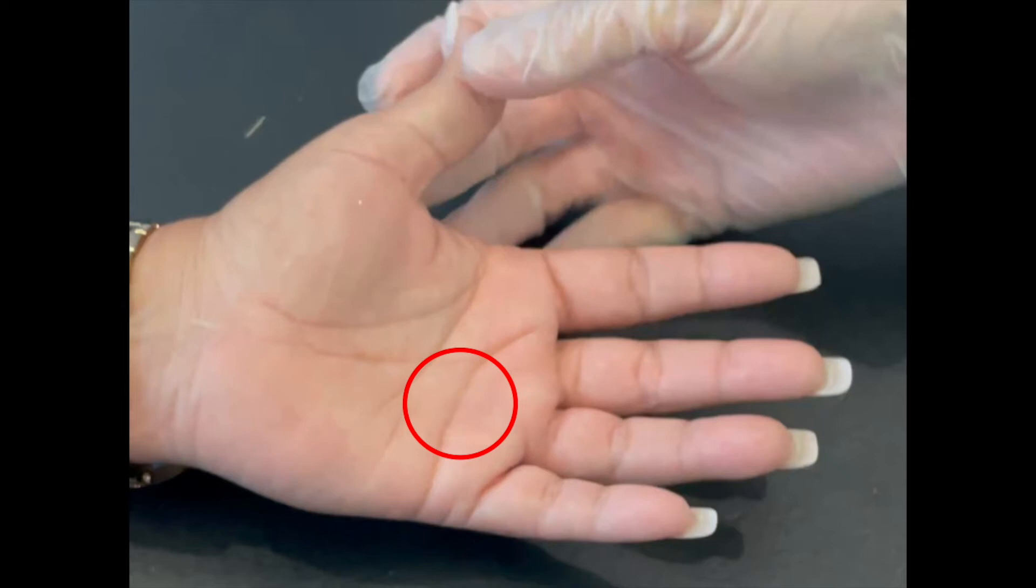Interestingly, the steroid injection does have a pretty wide effect, and you don't have to necessarily inject two adjacent fingers that are both triggering. In many cases, if we have a middle finger and ring finger triggering at the same time, we just inject one of the fingers.